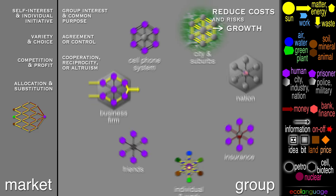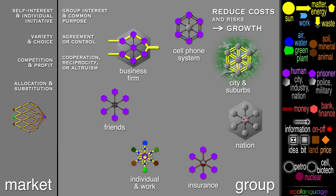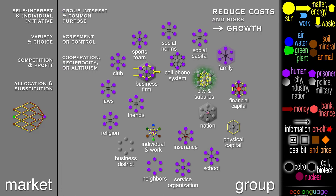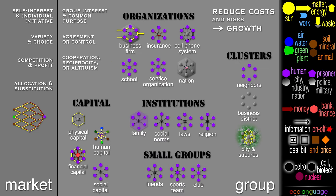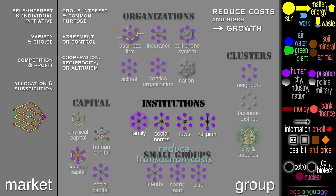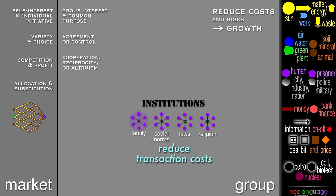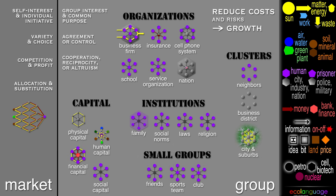These are very different examples, and of course there are many more, with many different centers and purposes. The social sciences sort them into loose categories with separate descriptions. For example, economists say that institutions reduce transaction costs. But here we can see a formal similarity in all of them, from the different kinds of capital, through social actions, to spatial clusters, which are also called agglomerations.